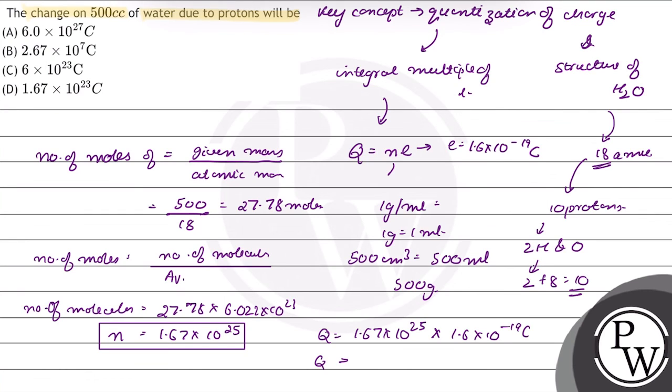This will be equal to 2.67 into 10 raised to power 7 coulombs. So the total charge on 500 centimeter cube of water due to proton is 2.67 into 10 raised to power 7 coulombs.